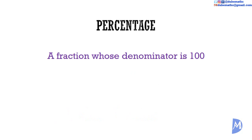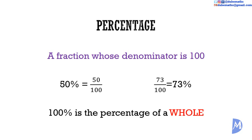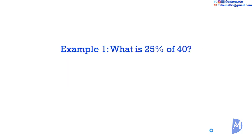A percentage is a fraction whose denominator is 100. Thus 50% is equal to 50 over 100 and 73 over 100 is equal to 73%. The percentage of a whole is 100%.